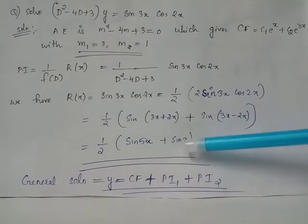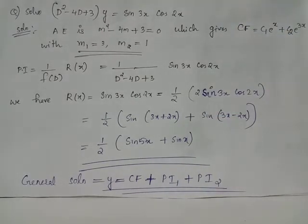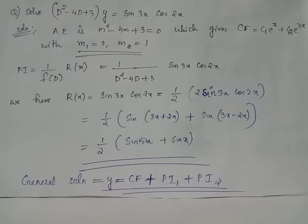Notice that this format matches the required r(x). The general solution is the sum of the complementary function and particular integral. Splitting: PI = PI1 + PI2, where PI1 = (1/2)·[1/f(D)]·sin5x and PI2 = (1/2)·[1/f(D)]·sinx. Thus y = CF + PI1 + PI2.